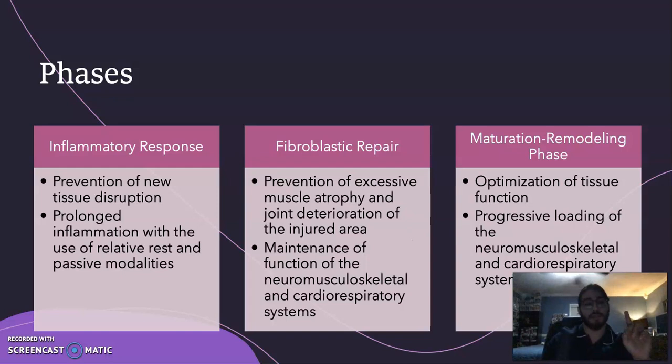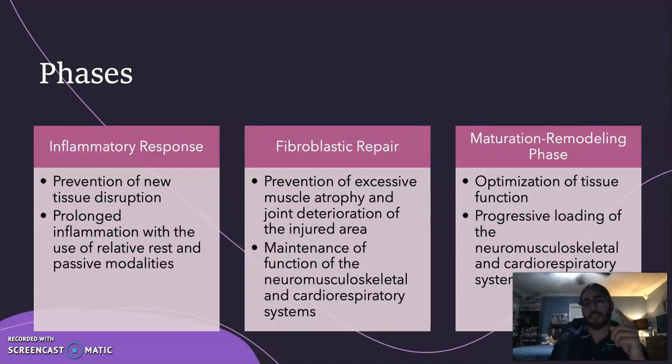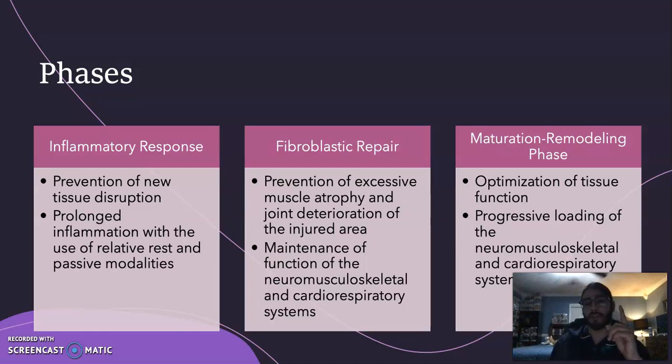For phase one, the inflammatory response, the focus is on prevention of new tissue disruption and prolonging from prolonged inflammation through the use of relative rest and passive modalities. Phase two focuses on prevention of excessive muscle atrophy and joint deterioration of the injured area, and maintenance of the neuromusculoskeletal and cardiorespiratory systems. Phase three, maturation remodeling, targets optimization of tissue function and progressive loading of those systems.